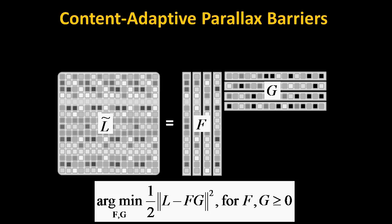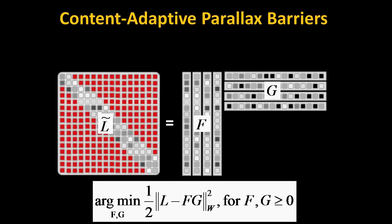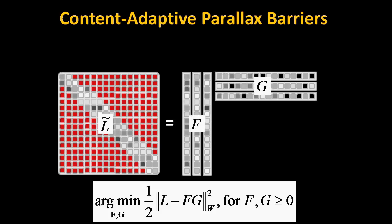Light field display using dual stacked LCDs can be cast as a matrix approximation problem. We introduce a weight matrix W to emphasize certain views in the optimization. Note that light field compression can be achieved by using a reduced set of masks.